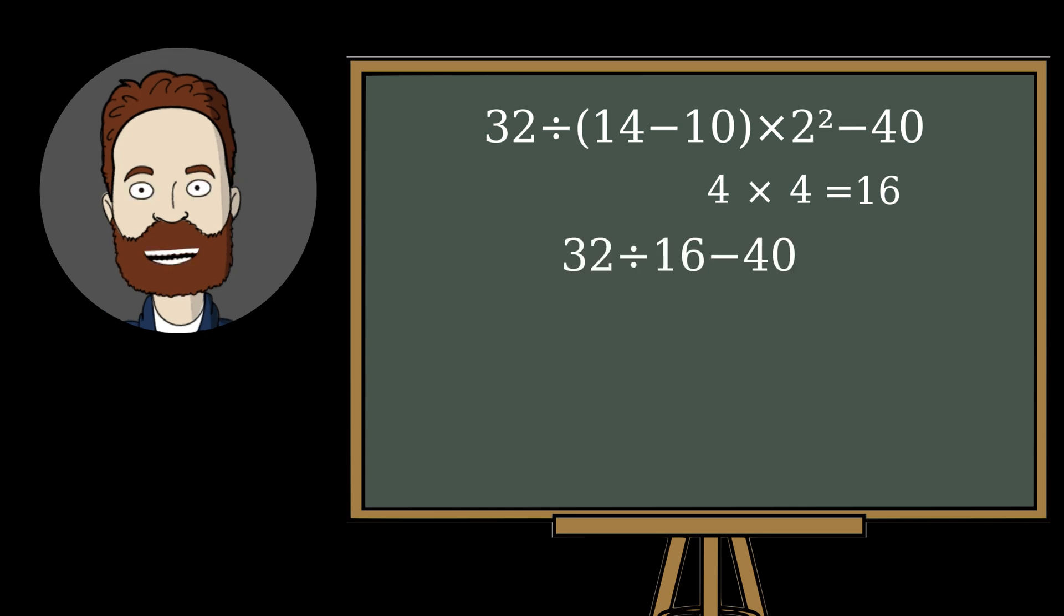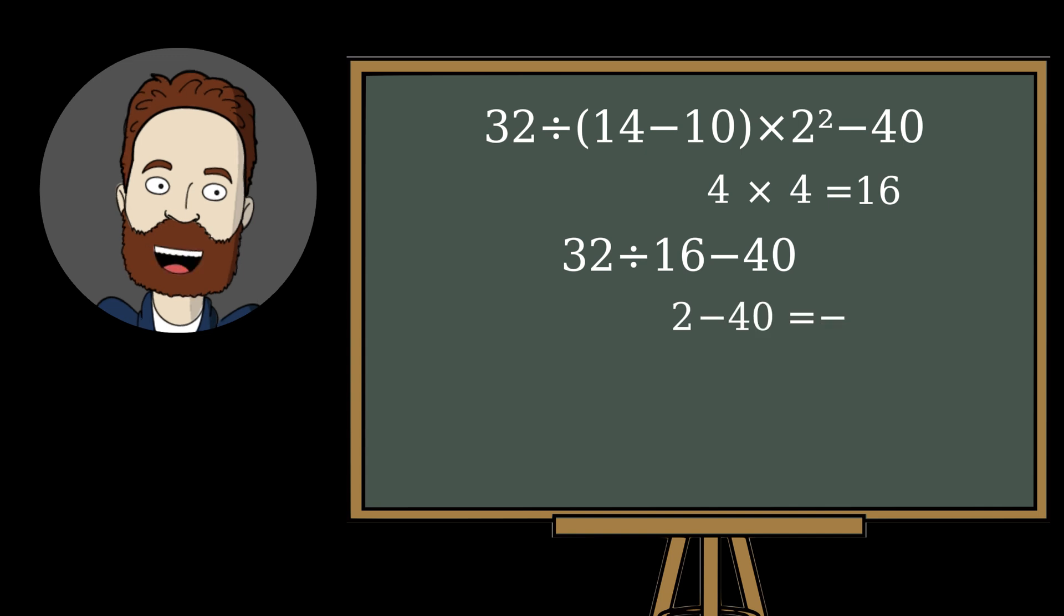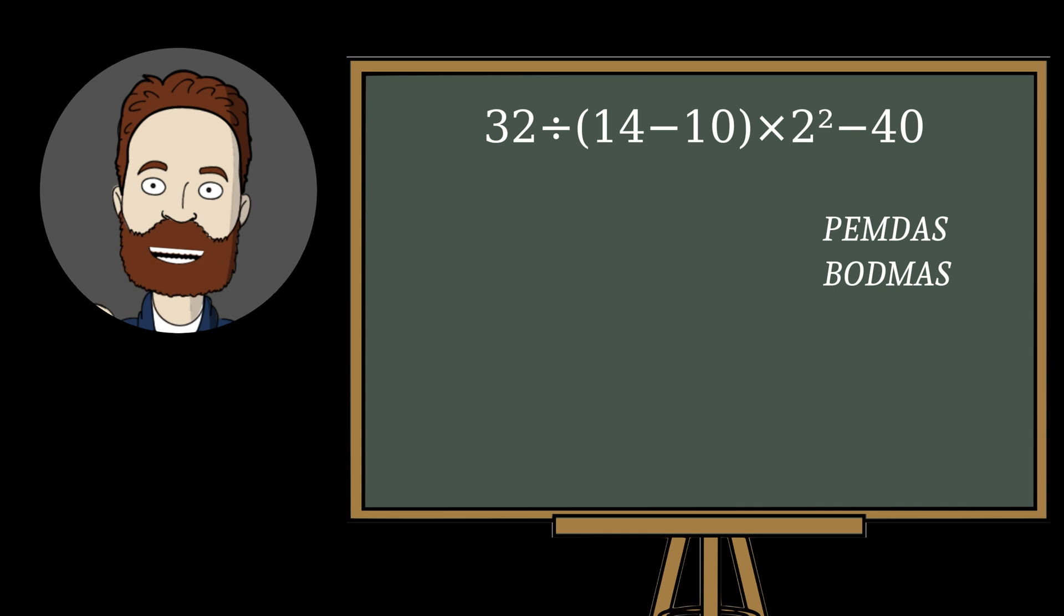Then 32 divided by 16 equals 2, and 2 minus 40 equals minus 38. But this is an incorrect solution, because here, multiplication is treated as more important, a common mistake because the letter M comes before D in PEMDAS.